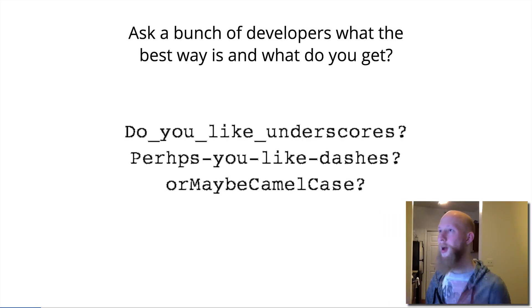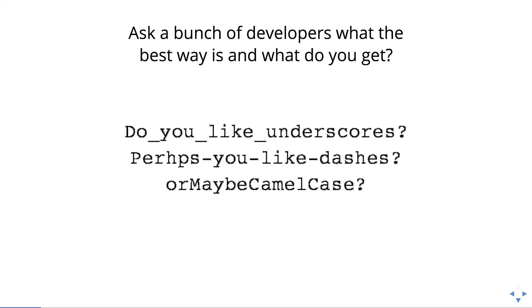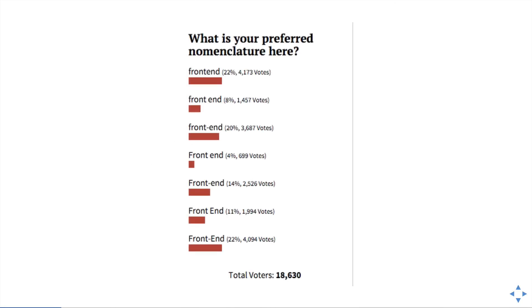So if you ask a lot of developers what the best way to write something as trivial as variable names is, what do you get? Are they going to say camelCase or snake_case, or perhaps dashes? Well, based on an actual survey, it's kind of all over the board. Nobody really has any kind of agreement, and that's a little bit troubling, don't you think?